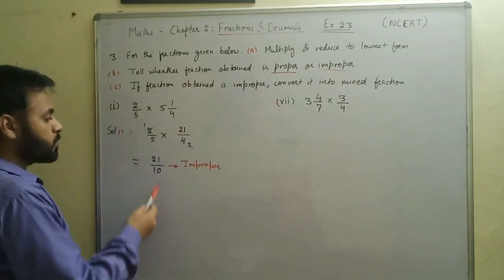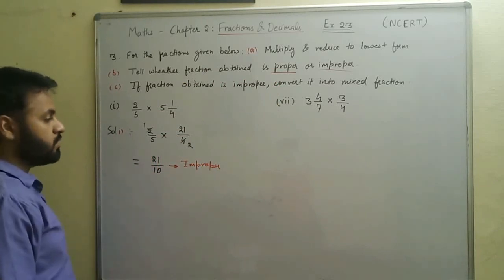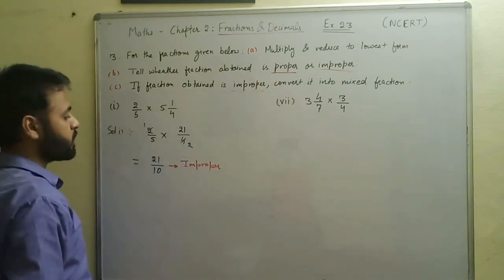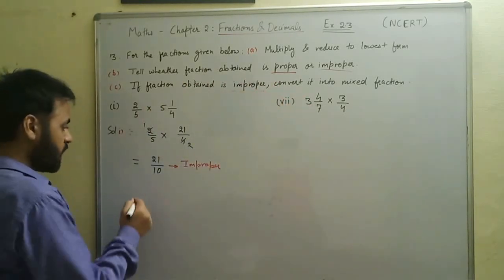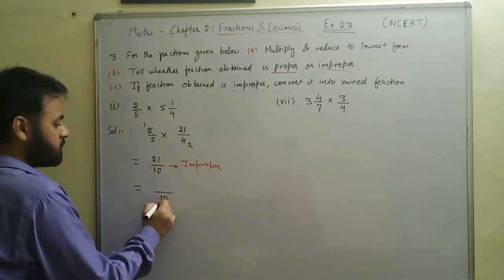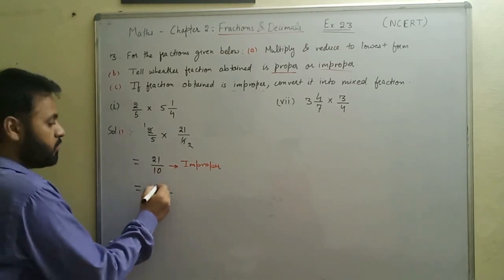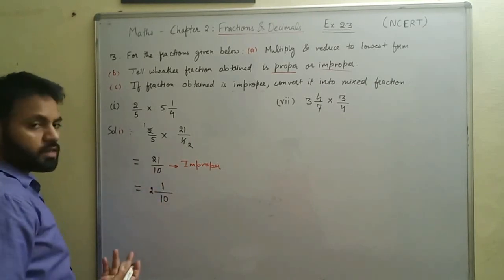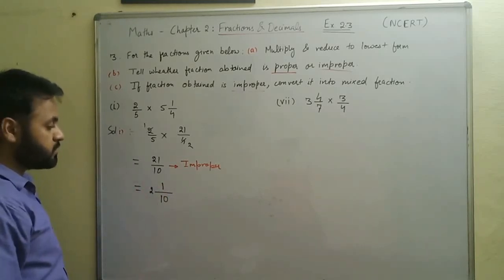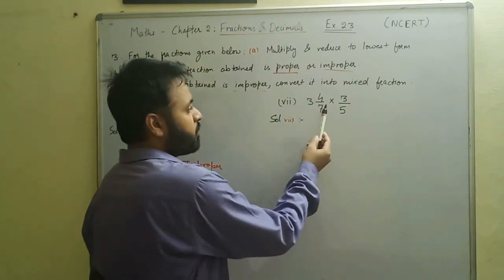Since the numerator twenty-one is greater than the denominator ten, it is an improper fraction. Now we change it into a mixed fraction: dividing twenty-one by ten gives ten twos are twenty, and twenty-one minus twenty leaves a remainder of one. So the mixed fraction is two and one by ten.